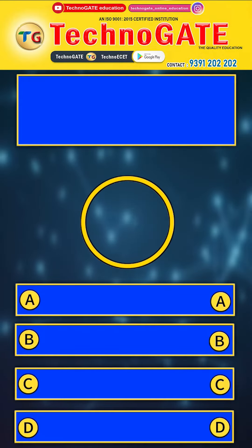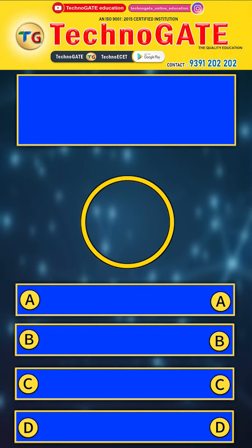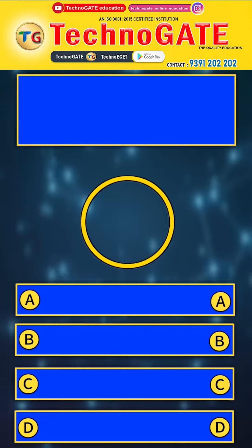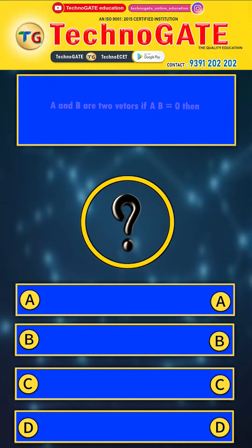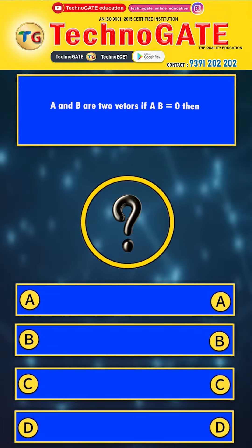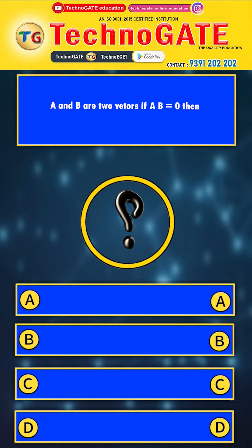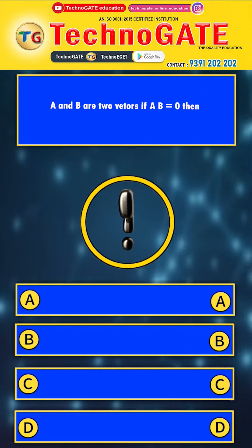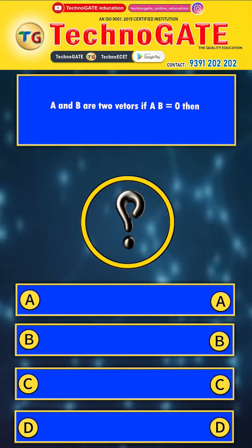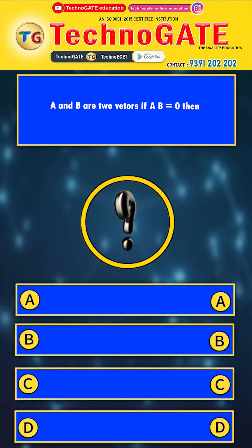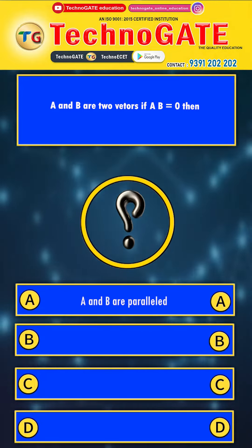Subject: Physics. Topic: Elements of Vectors. Today's question is: A⃗ and B⃗ are two vectors. If A⃗ · B⃗ is equal to 0, then which of the following is true? The options are — Option A: